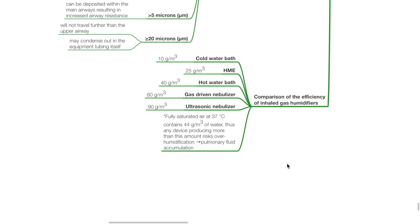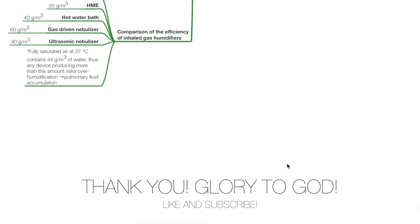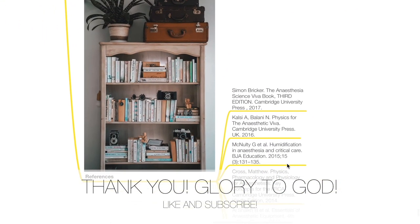Comparison of efficiency of inhaled gas humidifiers: cold water bath 10 g/m³; HME 25 g/m³; hot water bath 40 g/m³; gas-driven nebulizer 60 g/m³; ultrasonic nebulizer 90 g/m³. Fully saturated air at 37°C contains 44 g/m³ of water. Any device producing more than this amount risks overhumidification and potentially causes pulmonary fluid accumulation. These are the references. Thank you.